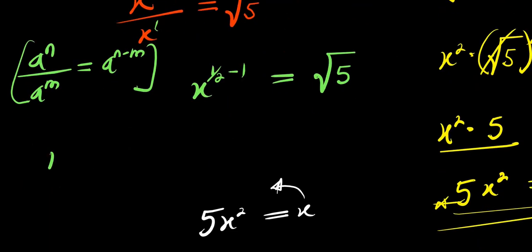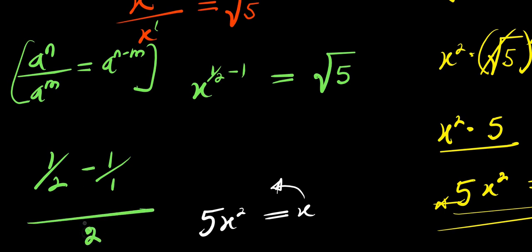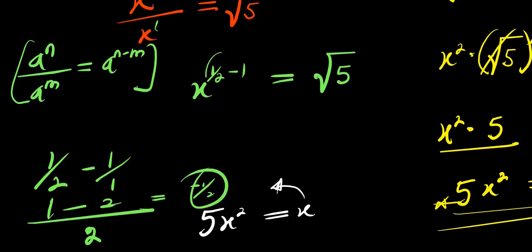Computing the exponent: 1 over 2 minus 1 over 1. Finding the common LCM, which is 2: we get 1 minus 2 over 2, which is negative 1 over 2. So x power negative 1 over 2 equals square root of 5.